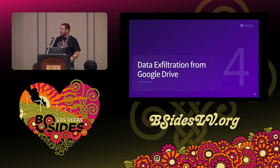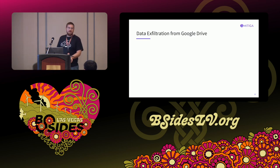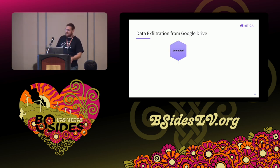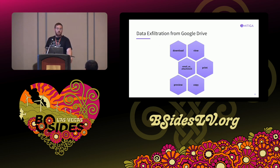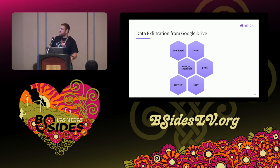Now let's talk about data exfiltration from Google Drive. There are six event names that may be related to data exfiltration: download (most obvious), view files, send as email attachment, print (they can print to PDF to exfiltrate large amounts of data), preview, and — least intuitively — copy to a more convenient location, such as a public folder. When you suspect a user, you can search which exfiltration-related events they performed. In threat hunting, you can search for anomalies in the appearance of these events.